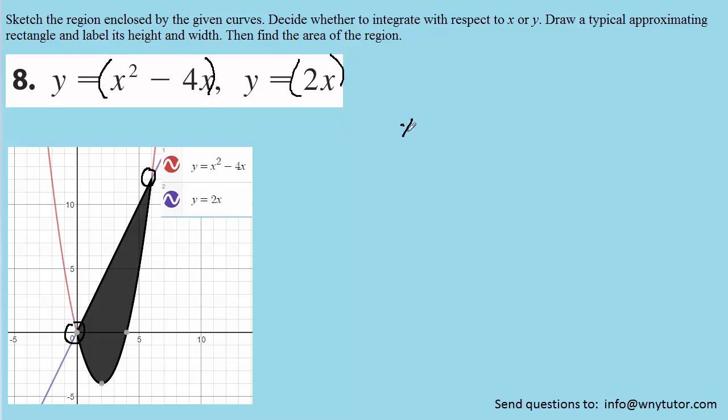So we're going to go ahead over here and set x-squared minus 4x equal to 2x. And since this is a quadratic equation, we have to set it equal to zero. So we'll subtract 2x from both sides of the equation. That'll give us x-squared minus 6x equals zero. And then we'll factor out a greatest common factor here, which would be x.